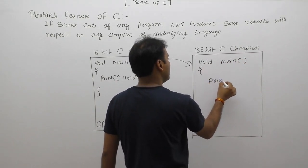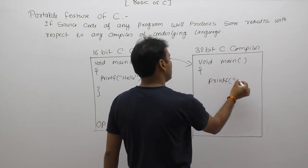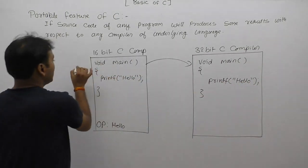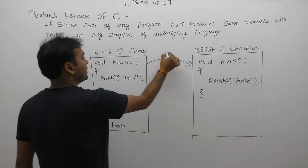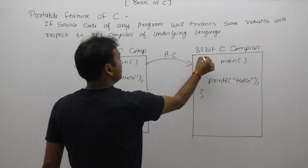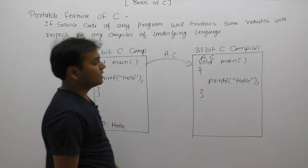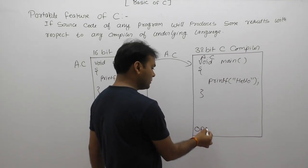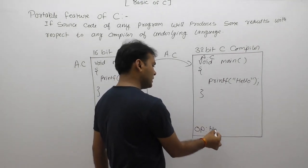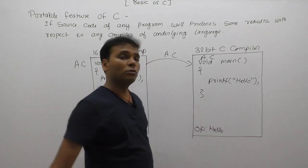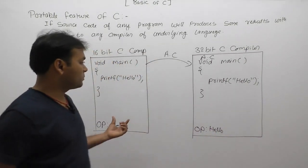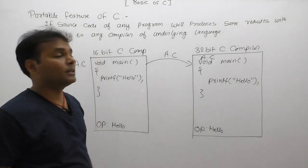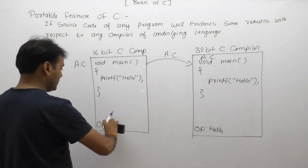The same source code is now used with a 32-bit compiler. The same 'void main' with 'printf("hello")' — we are copying the same source code from file 'a.c' to the 32-bit compiler. The result is again 'hello'. In this case, the C program is considered portable because it gives the same result on both 16-bit and 32-bit compilers.